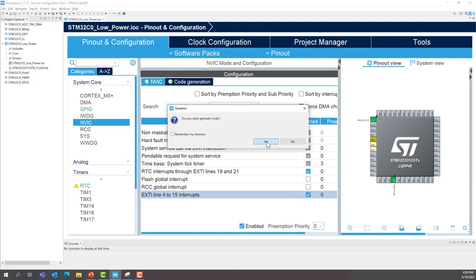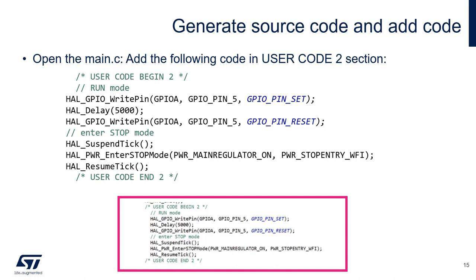You can see the RTC interrupt we enabled earlier is also listed there. Now generate the code — save your project and generate, then go to the C/C++ perspective as we'll be adding some code. The first part of the code will be added in the User Code 2 section in main.c. In run mode, we turn on the LED for five seconds then turn it off, then enter stop mode.